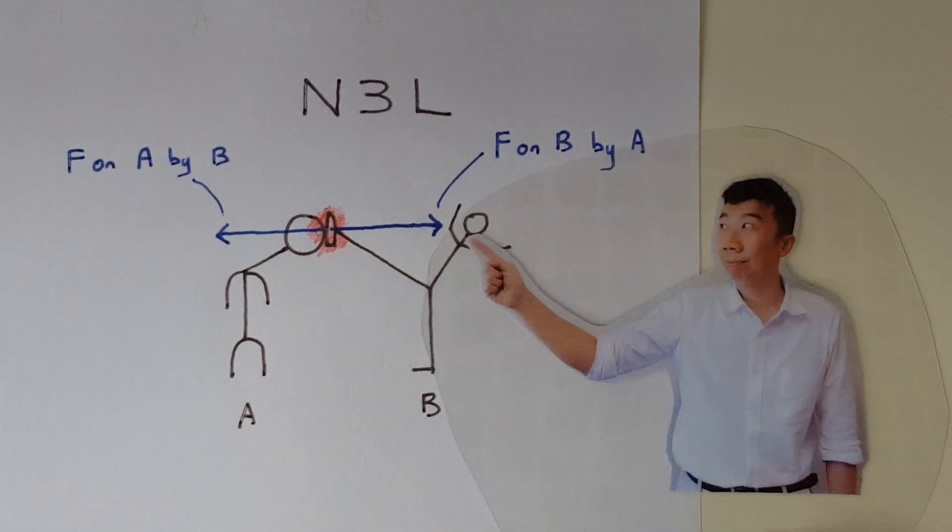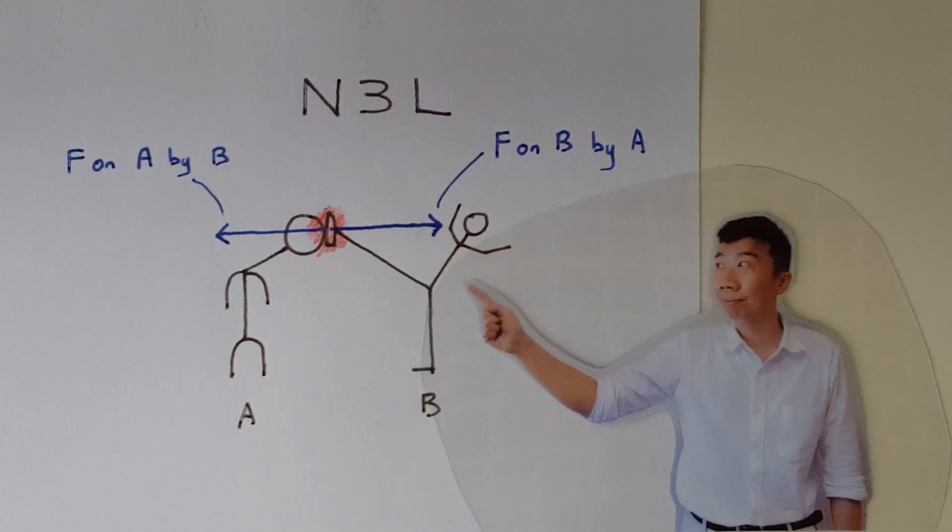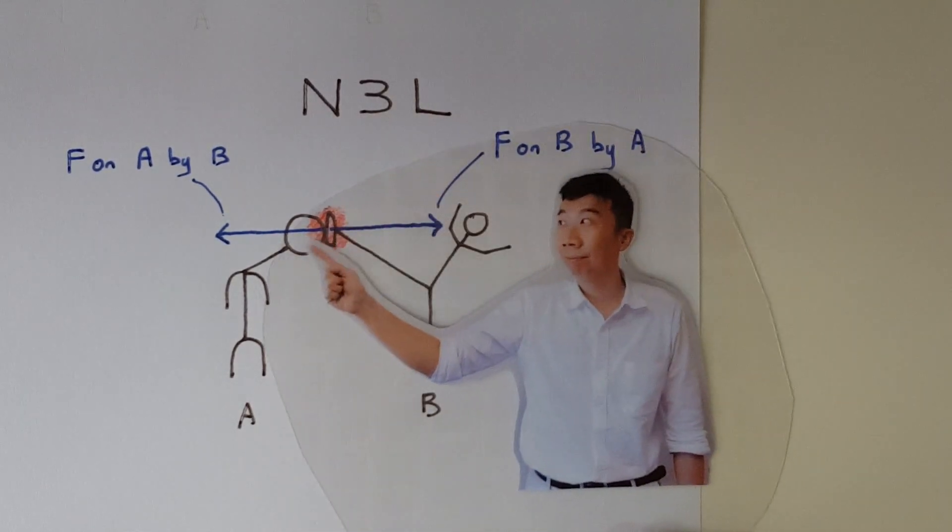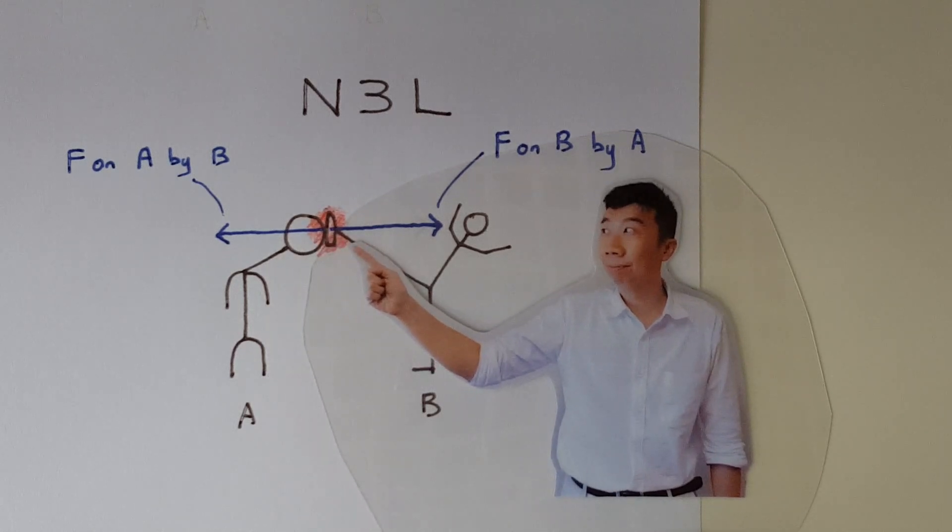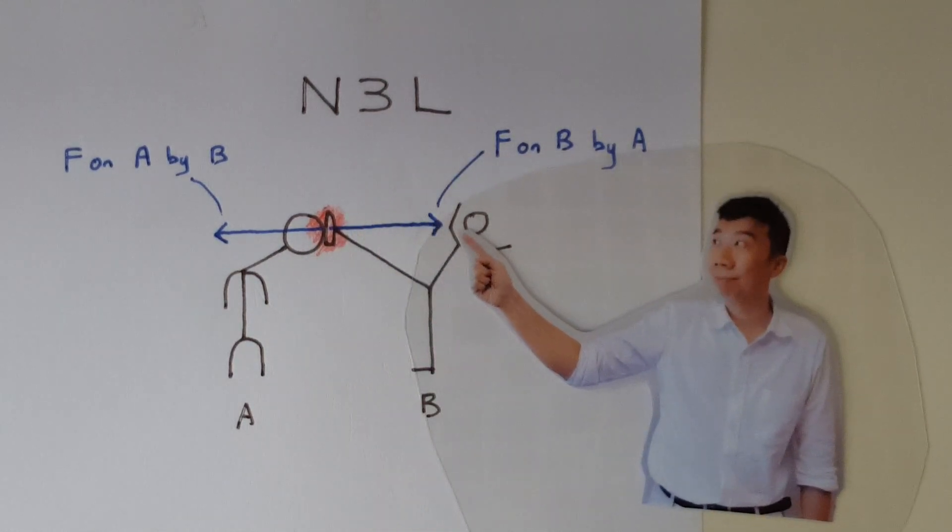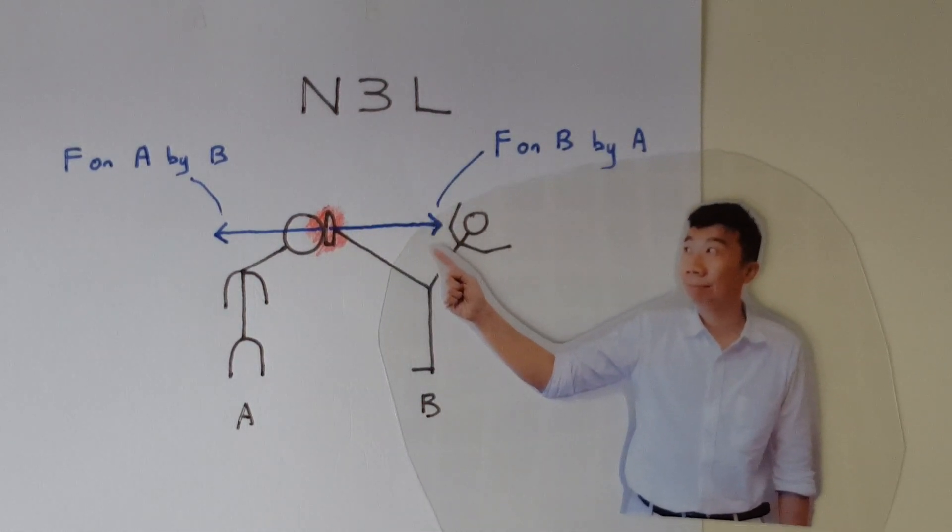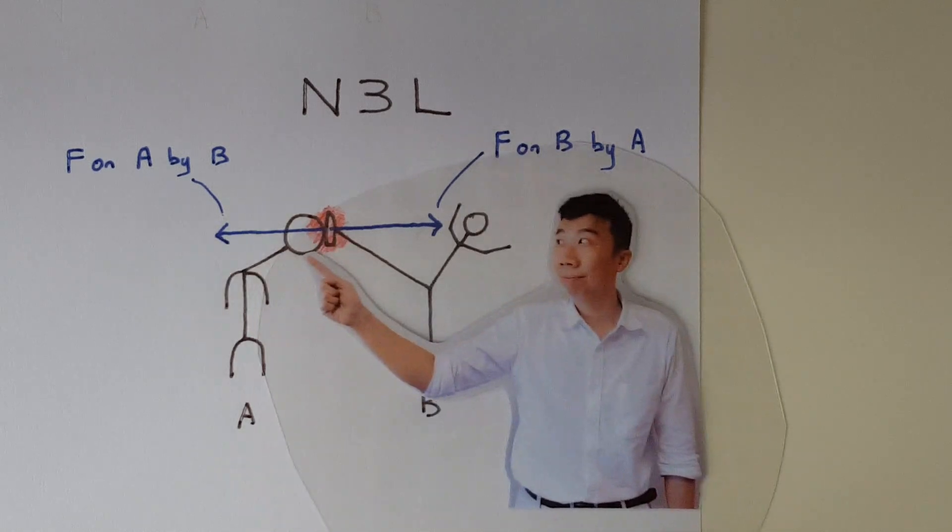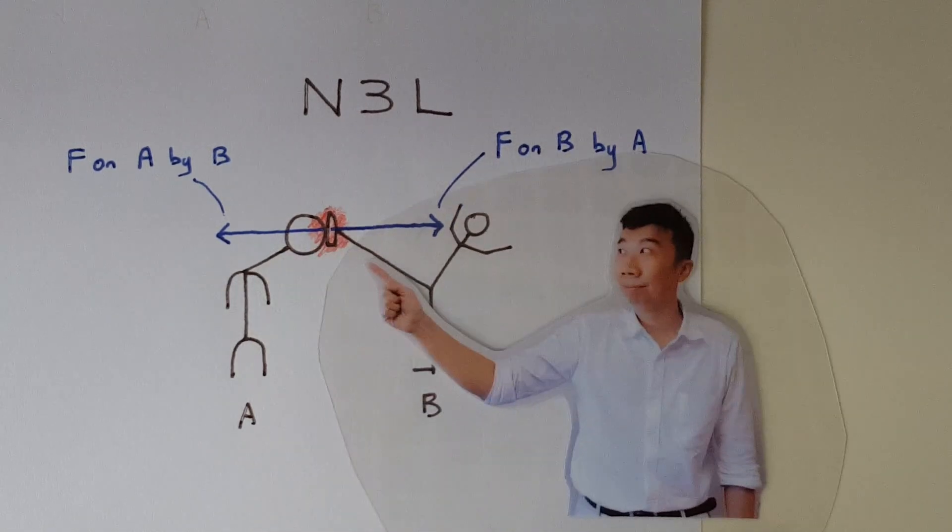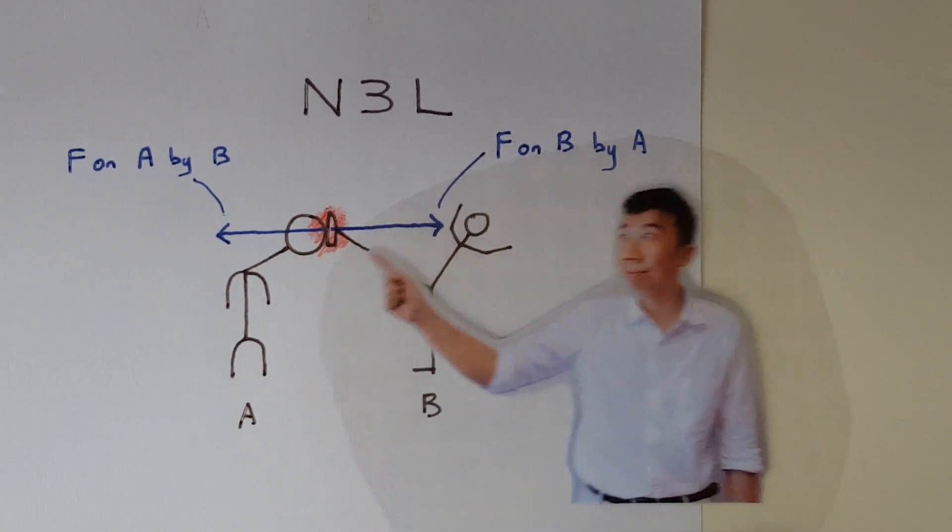This is me and this is you. According to Newton's third law, if I'm exerting a rightward force on you, then you must be exerting a leftward force on me. These two forces are equal in magnitude but opposite in direction.